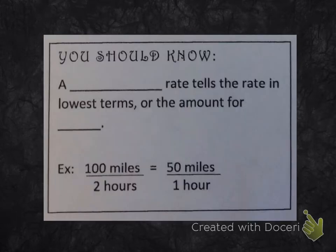You should know that a unit rate tells the rate in lowest terms, or the amount for one. So we would take that 100 miles in 2 hours, and to make it a unit rate, we would simplify so that it is a rate in the lowest terms. So 50 miles in 1 hour, or 50 miles per hour.